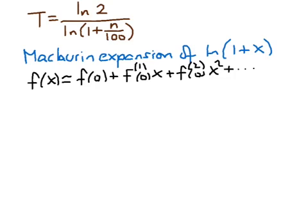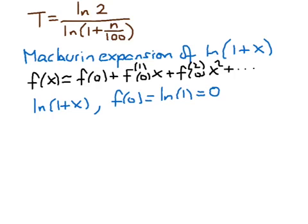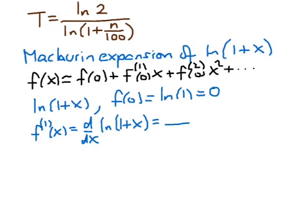With f(x) = ln(1 + x), we have f(0) = ln(1) = 0. The derivative is 1/(1 + x) — using the chain rule, we multiply by the derivative of the argument, which is 1 — so the first derivative evaluated at 0 is 1. We could work out higher terms, but for this rule we neglect them; that is the approximation.